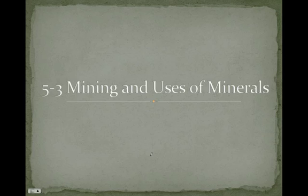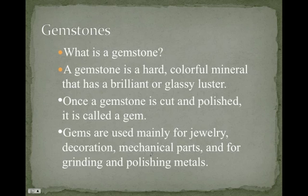Lecture 5-3: Mining and Uses of Minerals. There are certain types of minerals that are very useful. One type is a gemstone. A gemstone is a hard, colorful mineral that has a brilliant or glassy luster. The hardness has to be high — think of a diamond, which has a hardness of 10. Diamonds are very useful because we can use them to cut other things. Diamond-tipped sawblades are some of the most powerful sawblades we have. Once a gemstone is cut and polished, it is called a gem.